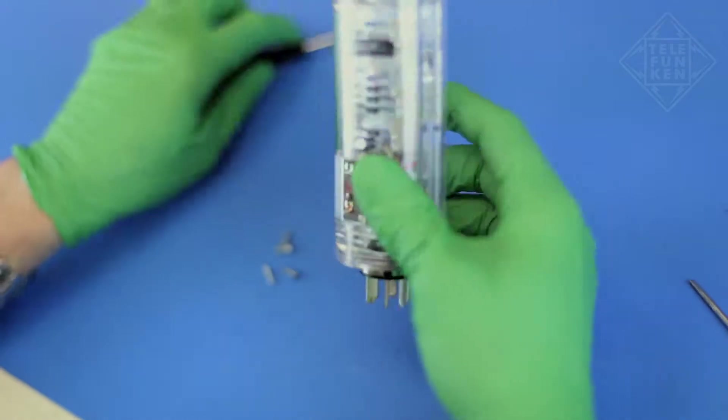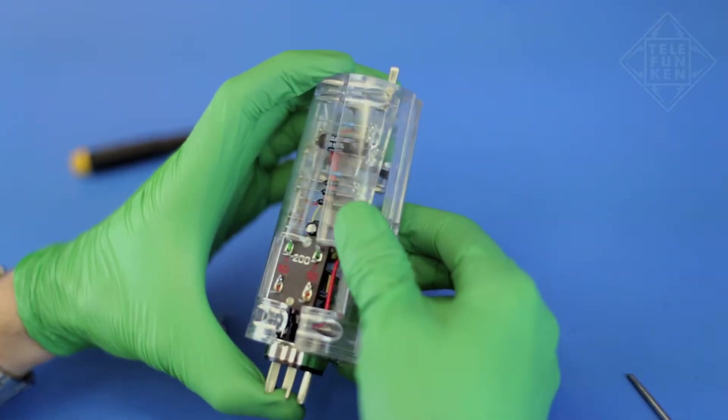After all four screws and nuts have been removed, remove both halves of the housing shell.